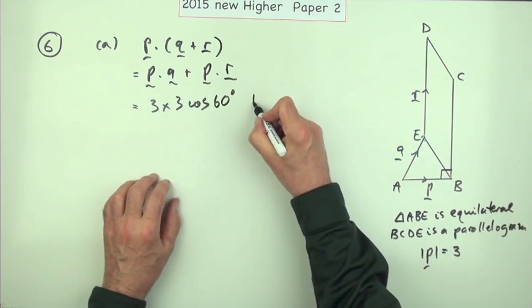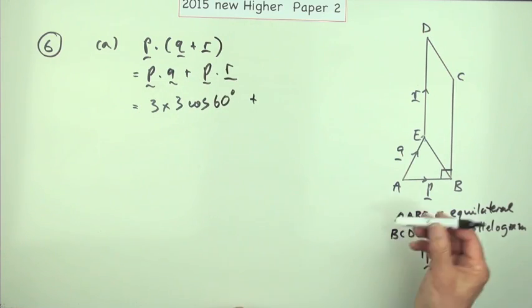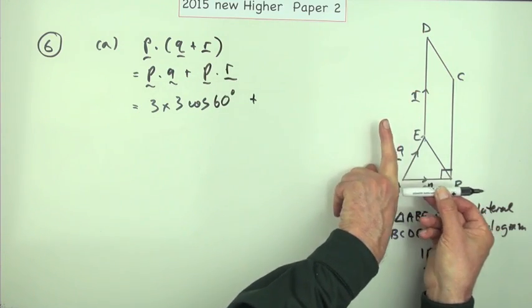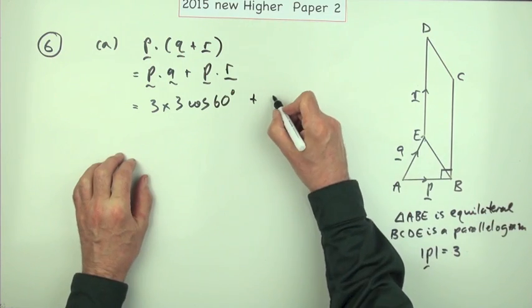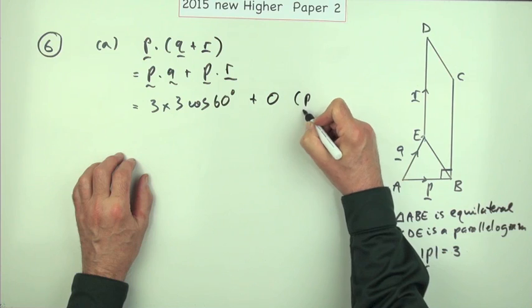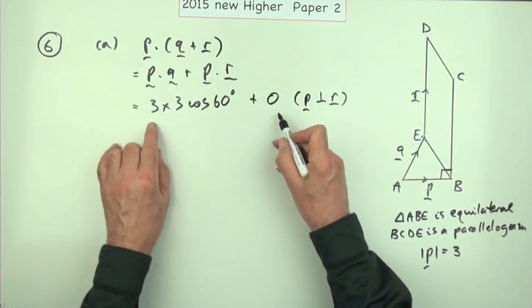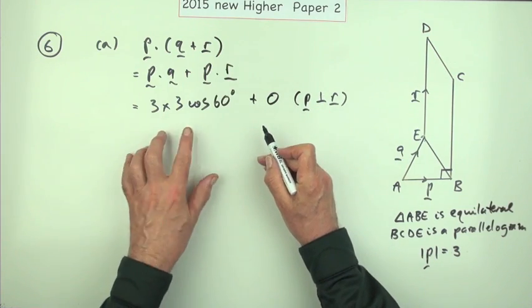p dot r is easier though, there's p, there's r, they're perpendicular so that comes to zero. The reason p is perpendicular to r.